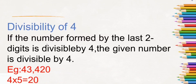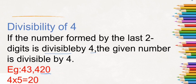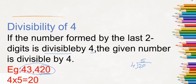Next, divisibility of 4. If the number formed by the last two digits is divisible by 4, the given number is divisible by 4. Here is 43,420. You don't have to divide the whole number — instead, just check the last two digits. If the last two digits are divisible by 4, the whole number can be divided by 4. Here, the last two digits are 20. Is 20 divisible by 4? Yes — 4 times 5 is 20, so 20 is divisible by 4 without leaving any remainder. So 43,420 is divisible by 4.